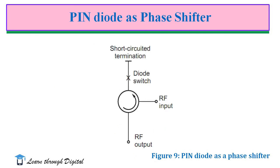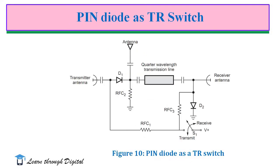A PIN diode can also be used as a phase shifter. This figure illustrates the application of a PIN diode as a phase shifter. The phase shifter uses a circulator to provide a matched input and output for the switched elements. A diode switch is used as either an open or short circuit over a finite bandwidth. Phase shifters are used in phased array radar systems, where a phase shifter is put in series with each radiator of an array of antennas.